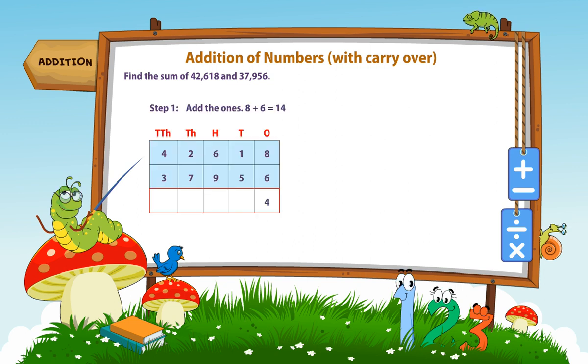Step 1. Add the ones. 8 plus 6 is equal to 14.